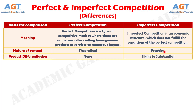Number three: in perfect competition the sellers produce or supply identical products, whereas in imperfect competition the products offered by the sellers can be either homogeneous or differentiated.